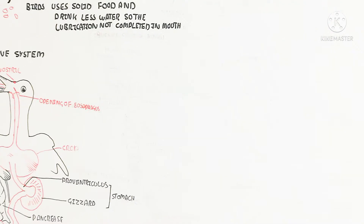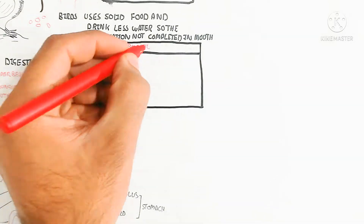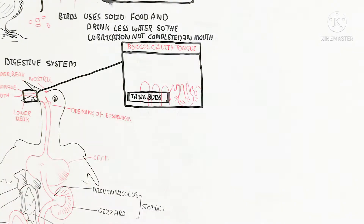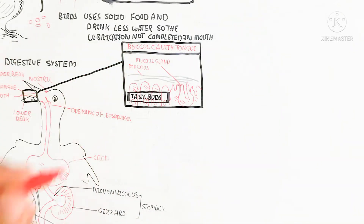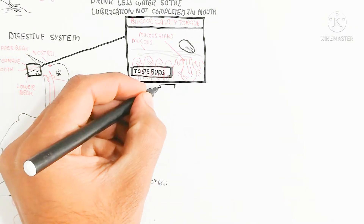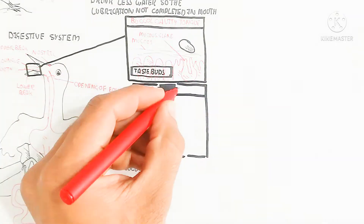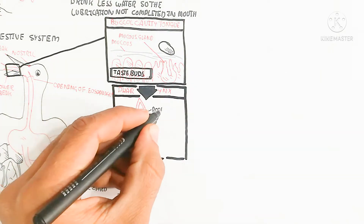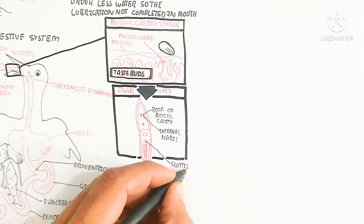The tongue contains taste buds and mucus glands which produce mucus. Although the amount of mucus is small, it lubricates the grain before swallowing. Swallowing is aided by the nervous system rather than peristaltic movement. The buccal cavity has a roof and floor, and contains the glottis, tongue, and internal nares, as visible in the diagram.